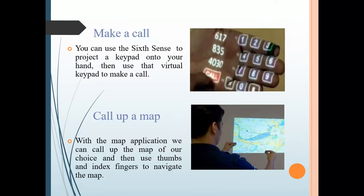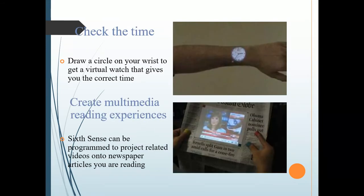Make a Call: We can use Sixth Sense to project a keyboard on your hand. Call a Map: With the map application, we can call up a map of our own choice. Check the Time: You can draw a circle on your wrist which shows the correct time.